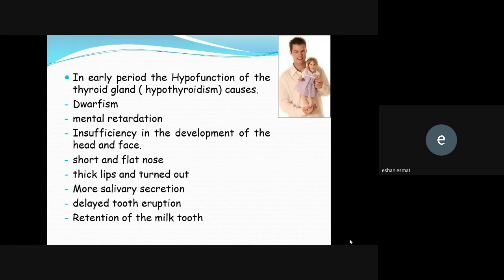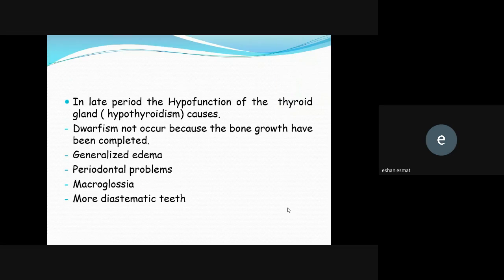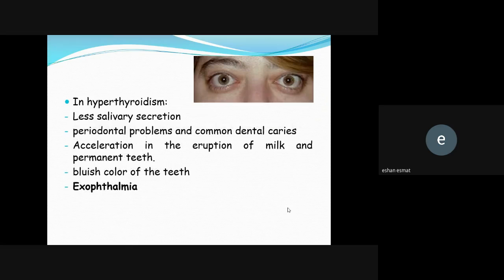Hypothyroidism — in early period: dwarfism, mental retardation, insufficient development of the head and face, short and flat nose, thick lips, increased saliva secretion, delayed tooth eruption, and retention of the primary teeth. In the late period: dwarfism does not occur because bone growth is already completed; but generalized edema, periodontal problems, macroglossia, and more diastematic teeth may be seen. Hyperthyroidism: less saliva secretion, periodontal problems, more dental caries, acceleration in the eruption of both primary and permanent teeth, and bluish discoloration of the teeth.